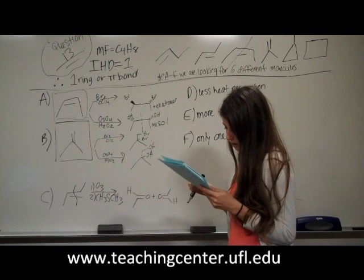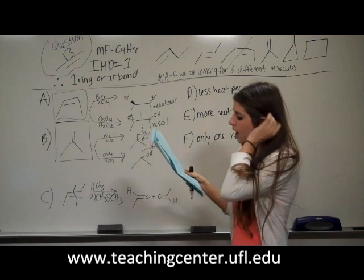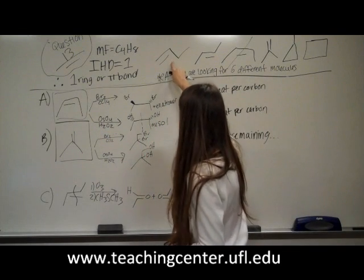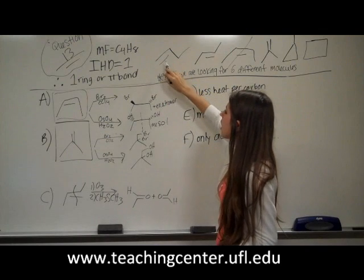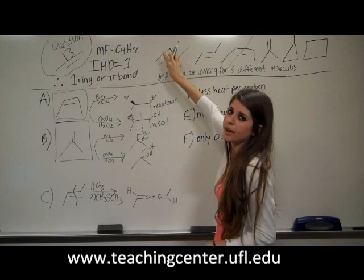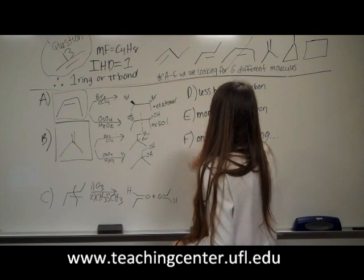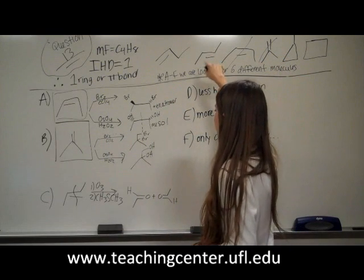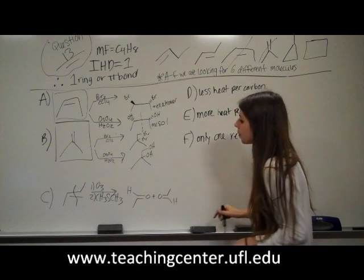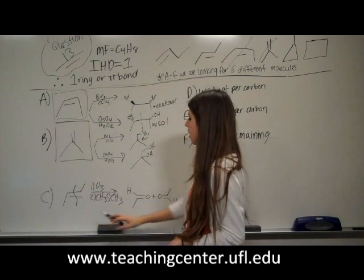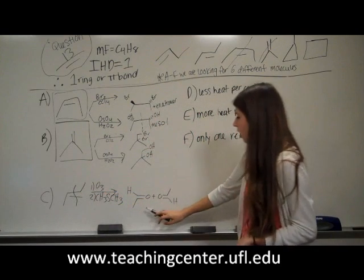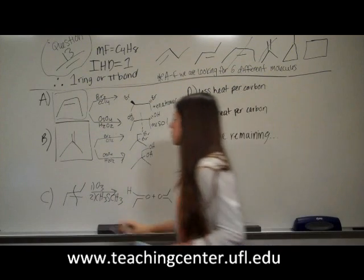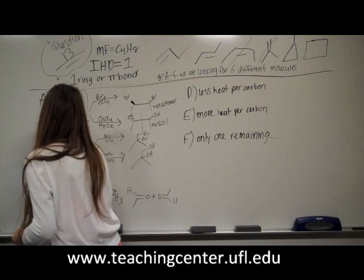For Unknown C: it was treated with ozonolysis reduction conditions and resulted in the formation of only one product. If we tried ozonolysis on 1-butene, we would get two different products — formaldehyde and another aldehyde — so that doesn't work. But if we use trans-2-butene and break the double bond, squeezing in the oxygens, we get two of the same product: acetaldehyde. So trans-2-butene is the answer for Unknown C.